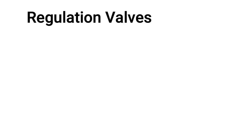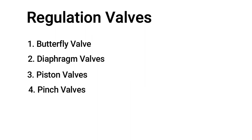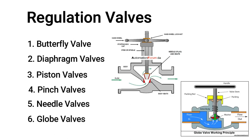Now we will see regulation valves, which are the second type. From isolation valves, butterfly, diaphragm, piston, and pinch valves are also used as flow regulation valves. Two new valves in this category are needle valves and globe valves.